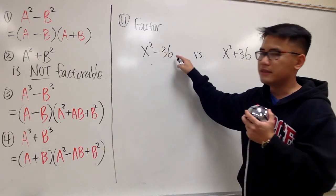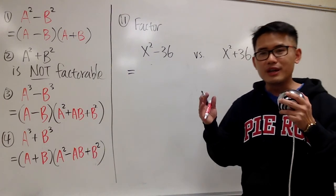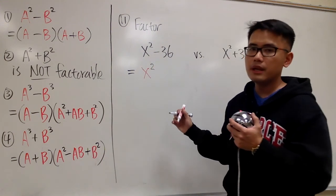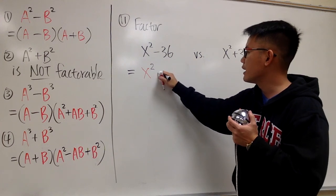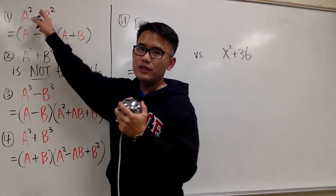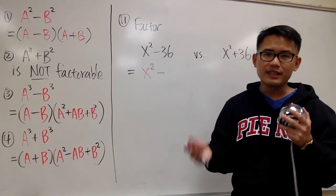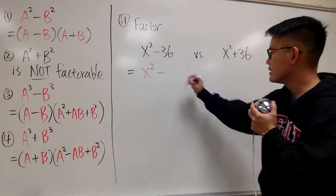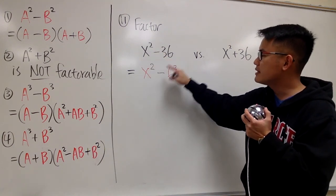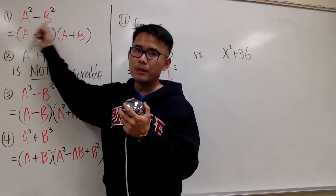Let's factor x² - 36. Let's look at x squared as x to the second power. We have a subtraction, and the power is 2. So the first formula is a hint — we can use that. We ask ourselves: 36 is what to the second power? Well, 6 to the second power gives us 36. Once we write x² - 36 as x² - 6², this matches exactly with formula number 1.